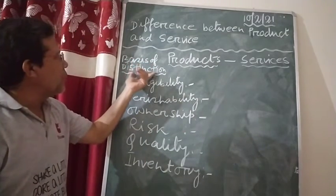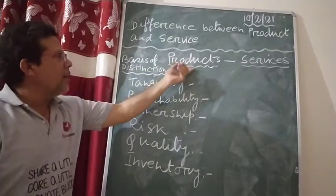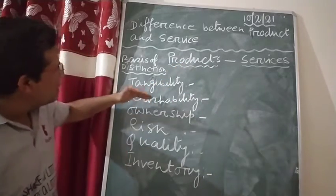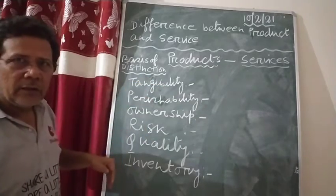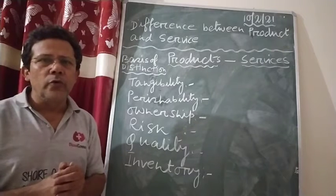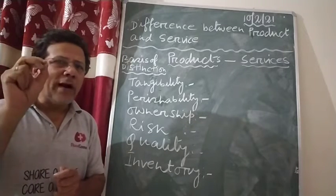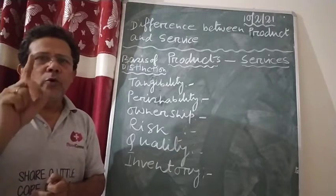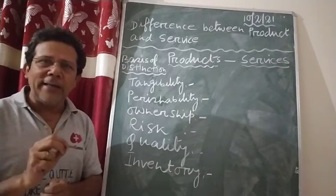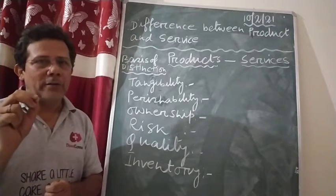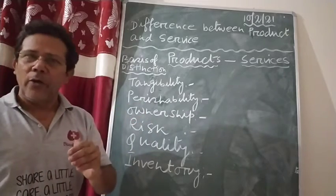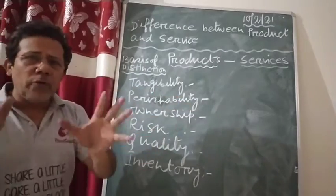First, you write the basis of distinction, then you write the product column, then you write the services column. If it is a five-mark question, you are supposed to write five differences. But I always told you to write one extra — if you write one extra and any five are right, you get full marks. So here, we are going to discuss six points.